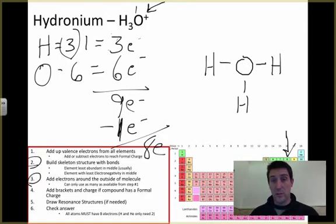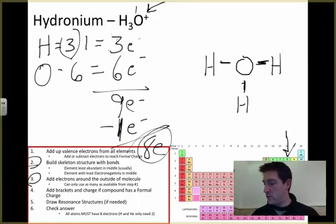Now I need to add electrons wherever I need to add those. I've used up two, four, six - that means I have two more I get to use because I have eight total. I can put those around the oxygen.